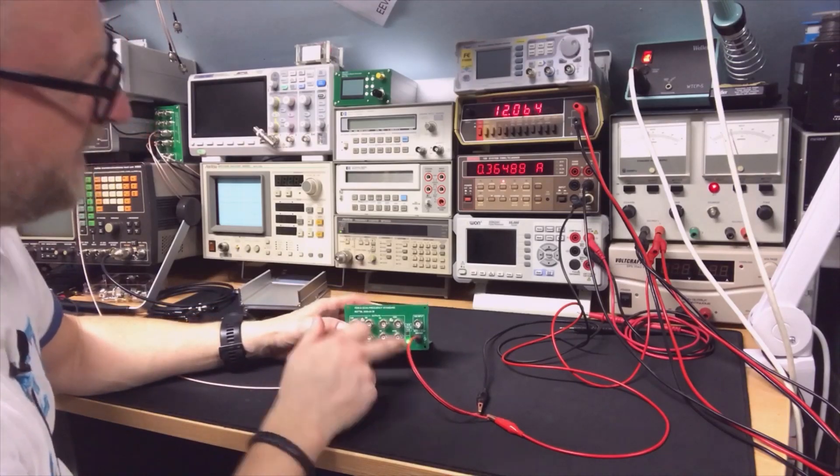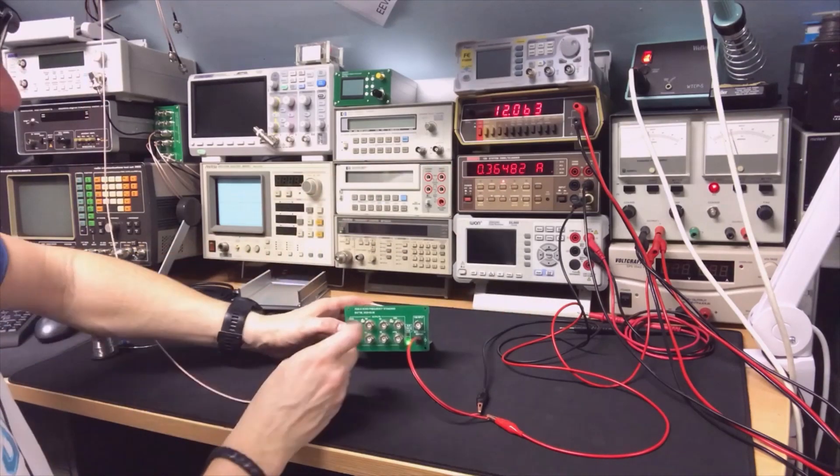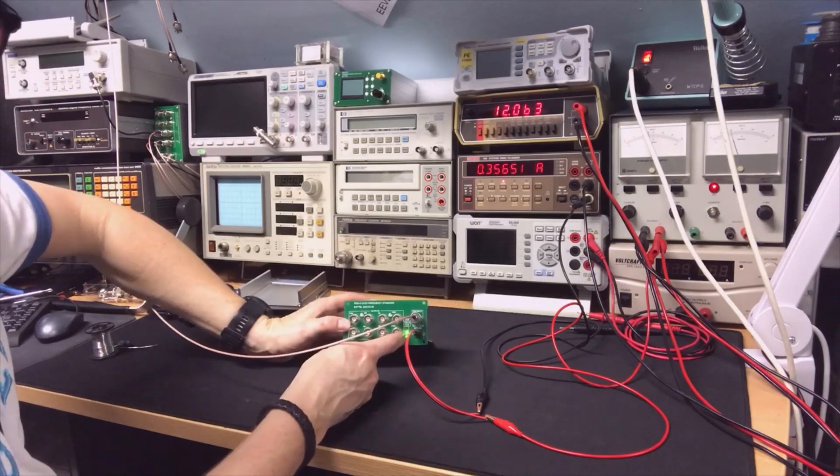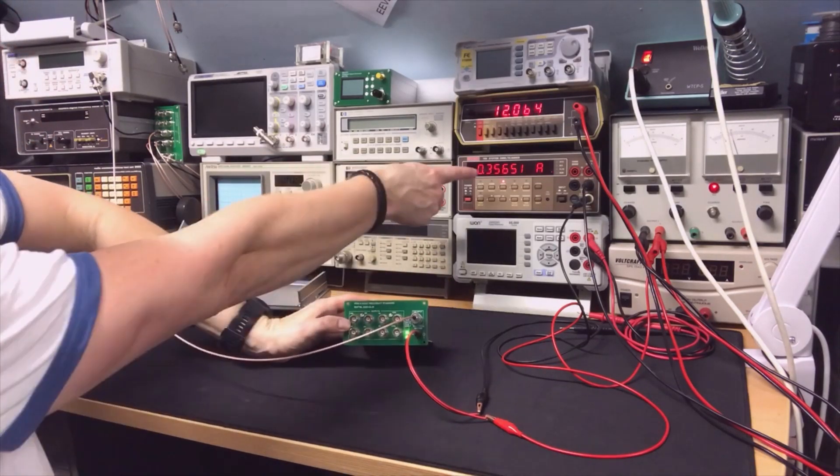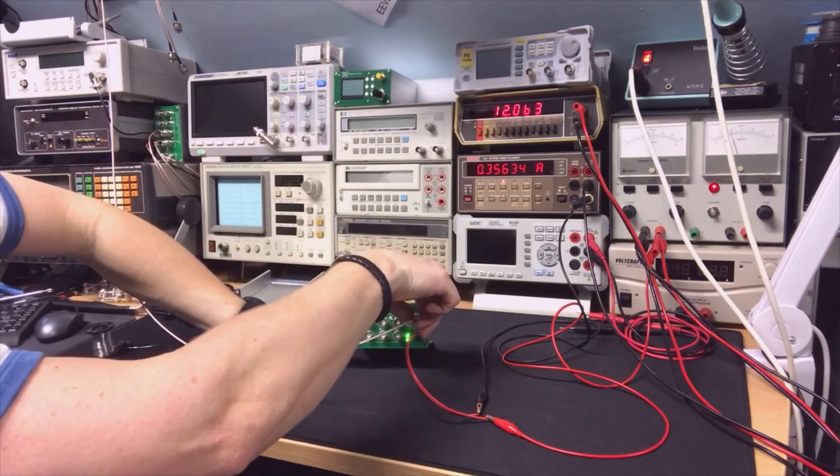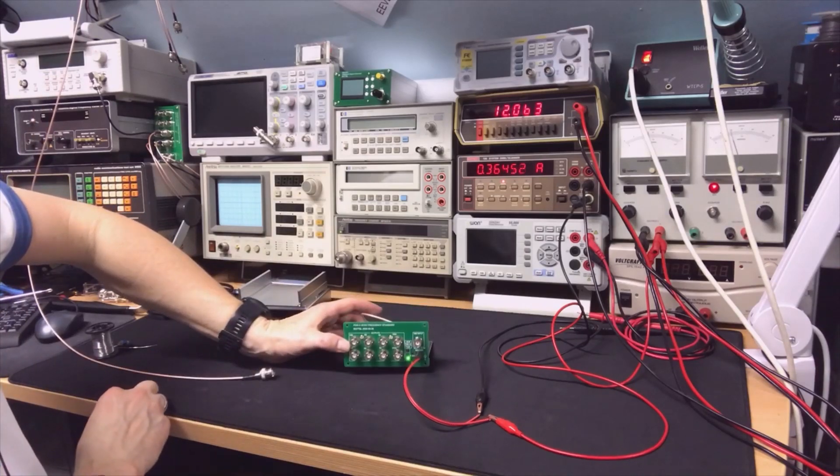But it should switch off its internal clock and it doesn't - well it's not using it, but I actually wanted it to switch off. So if I'm now putting the power, you see one light is on and it's 360 milliamps.